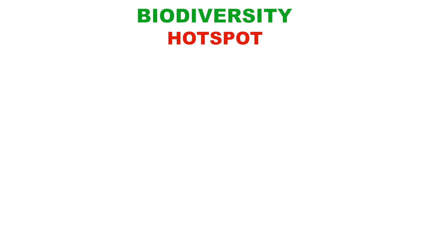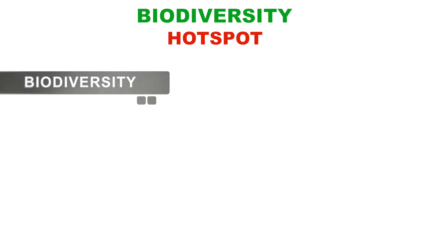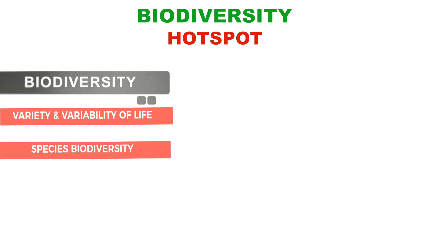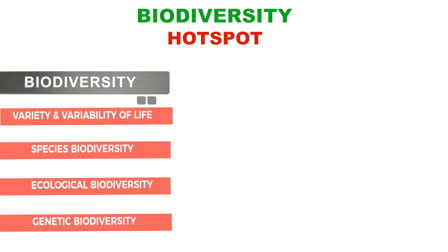In this video we will be discussing about biodiversity hotspots. First, let's break up the terms and understand their meanings. Diversity means variety, variability, dissimilarity, and multiplicity. When we prefix 'diversity' with 'bio,' we mean the variety and variability of life on Earth, including all living organisms. Here, particularly when talking about biodiversity hotspots, we focus on species biodiversity, though we also include ecological and genetic biodiversity.